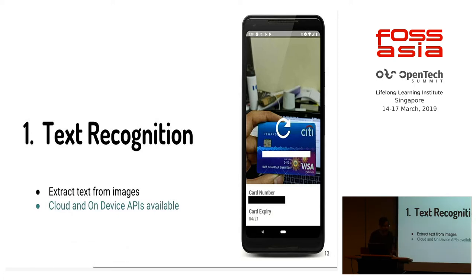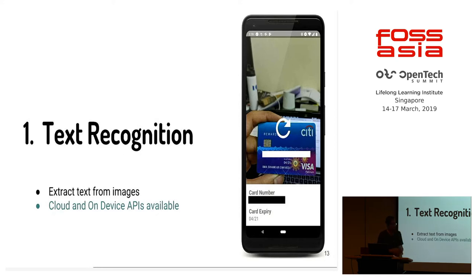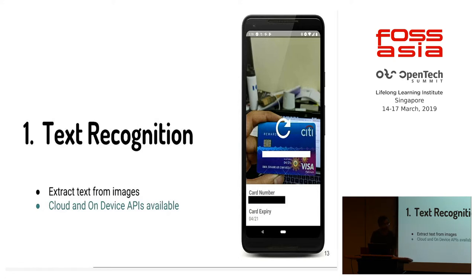The text API has both cloud and on-device APIs available. The limitation of the on-device API is that it can only detect Latin characters. If you want to support Hindi, Gujarati, and other non-Latin languages, you have to use the cloud API. Cards normally have Latin characters, so the on-device API worked for me.